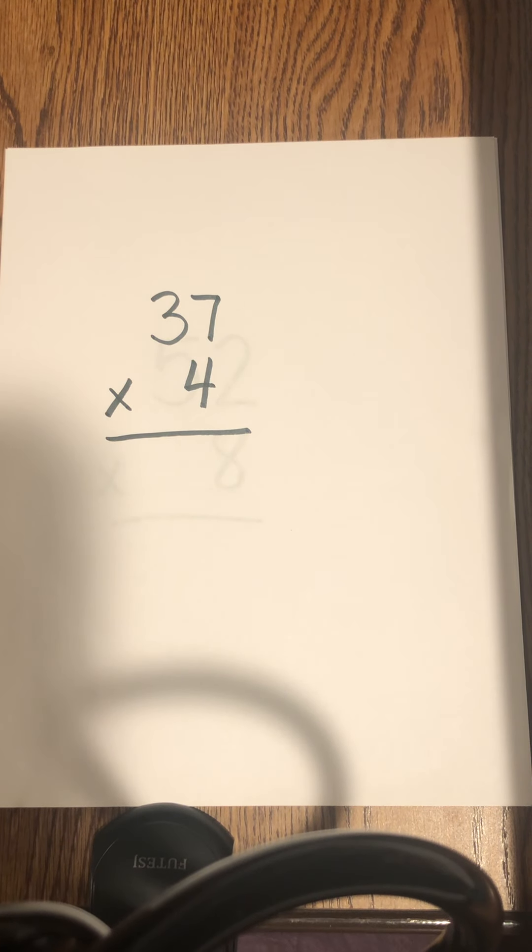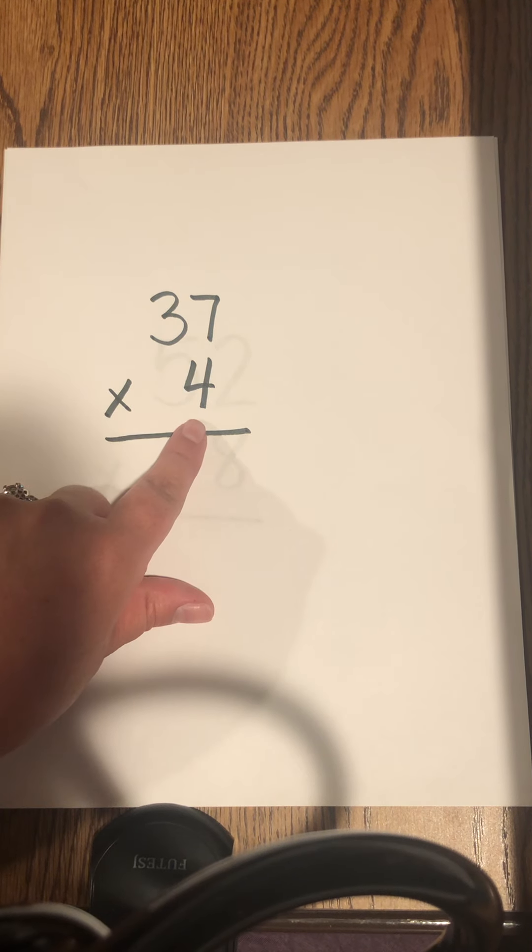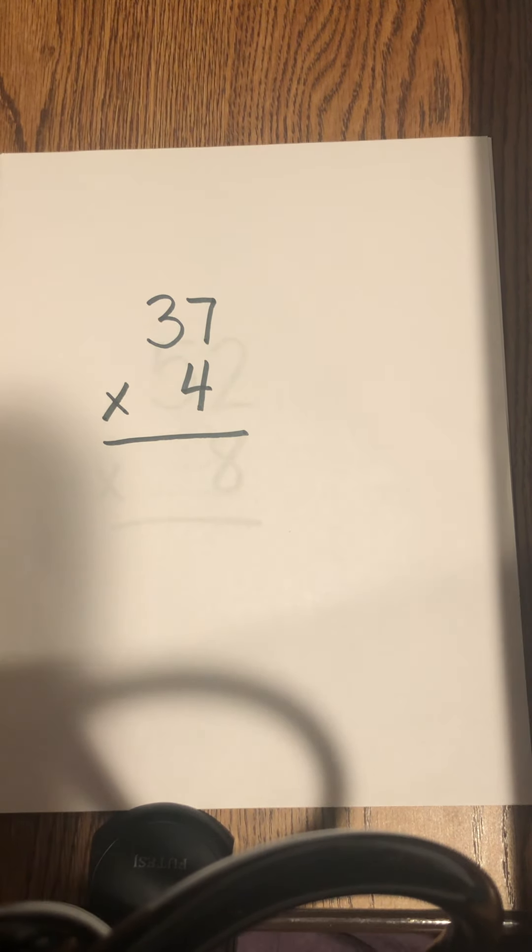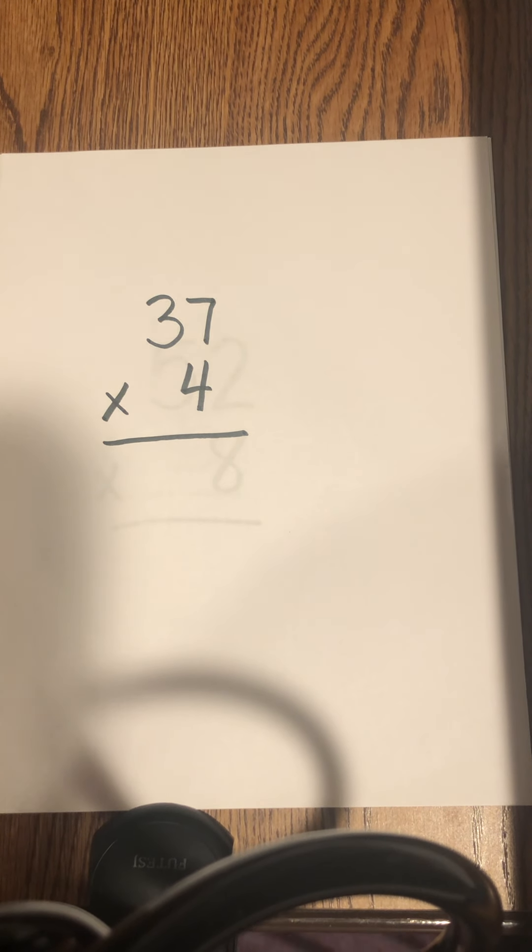Okay, today we're going to be looking at multiplying a two-digit number by a single digit number, one-digit number. Now we talked about this yesterday, watched a video, and I want to break it down in a little bit of a different way to help you guys see the pieces of how we look at and find the answer for 37 times 4.